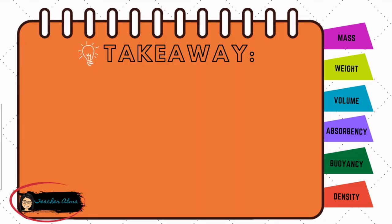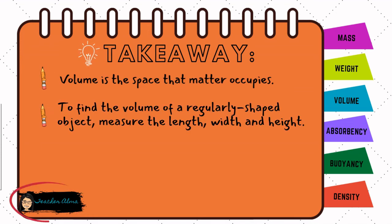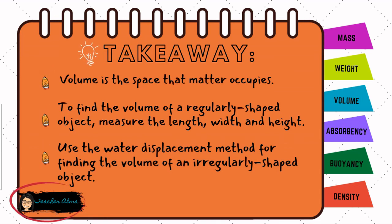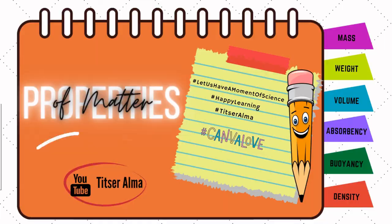Here are the takeaways from this video. Always remember that volume is the space that matter occupies. To find the volume of a regularly shaped object, measure the length, width, and height. Use the water displacement method for finding the volume of an irregularly shaped object. I hope that you have learned something from this video. Watch out for the upcoming video lessons about the other properties of matter.